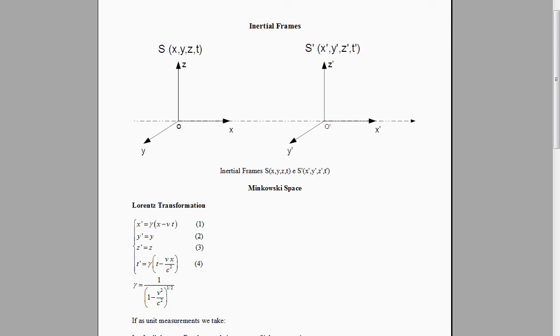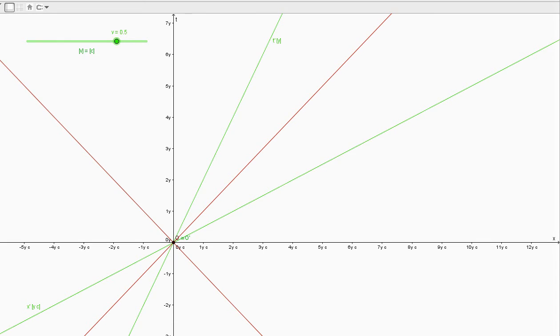To measure time and length, we prepare two clocks and two meters that are perfectly equal when measured at rest in the same reference frame. We put one clock and one meter in S and the others in S'.